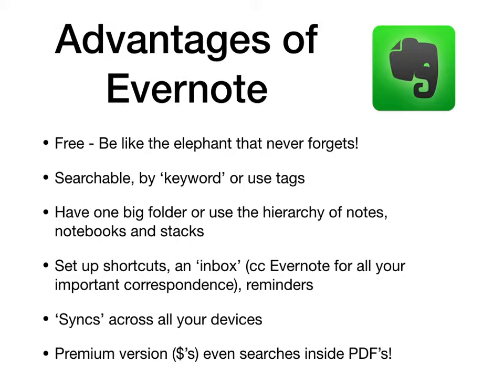Evernote is free and searchable. You can set up keywords and tags to find things. Different people approach it in different ways — you can have one big folder or use a hierarchy of notes, notebooks, and stacks, similar to files and folders. You can set up shortcuts and CC yourself as an inbox for any important correspondence, so it's all kept in one place. It syncs across all your devices. The premium version is what sold me initially: when you store PDFs in Evernote, it actually searches within them, so those pedigrees that someone sent you — if you can remember a name — you'll actually be able to find them.